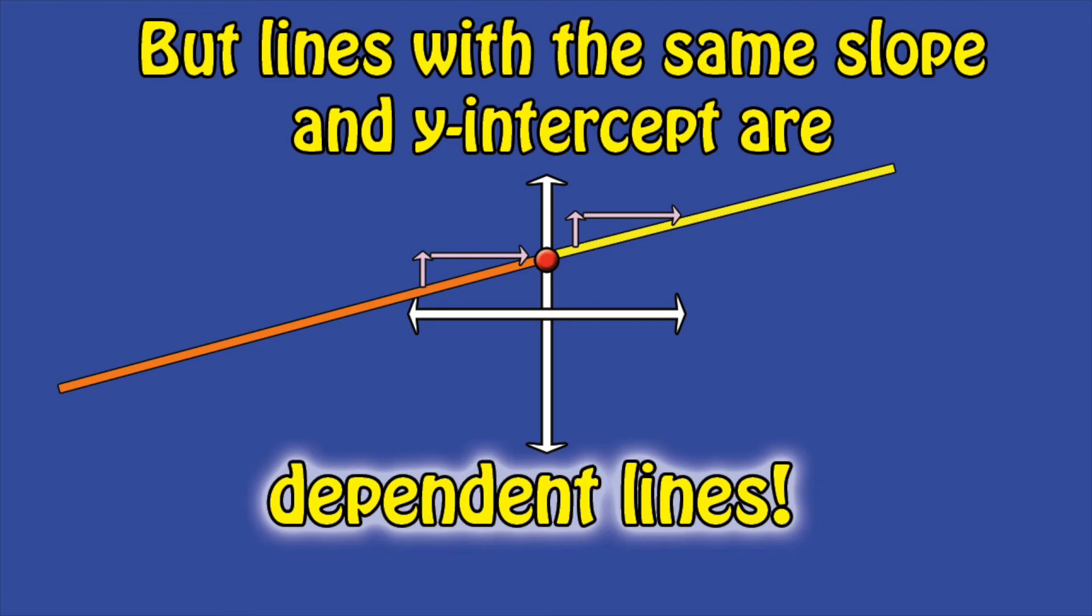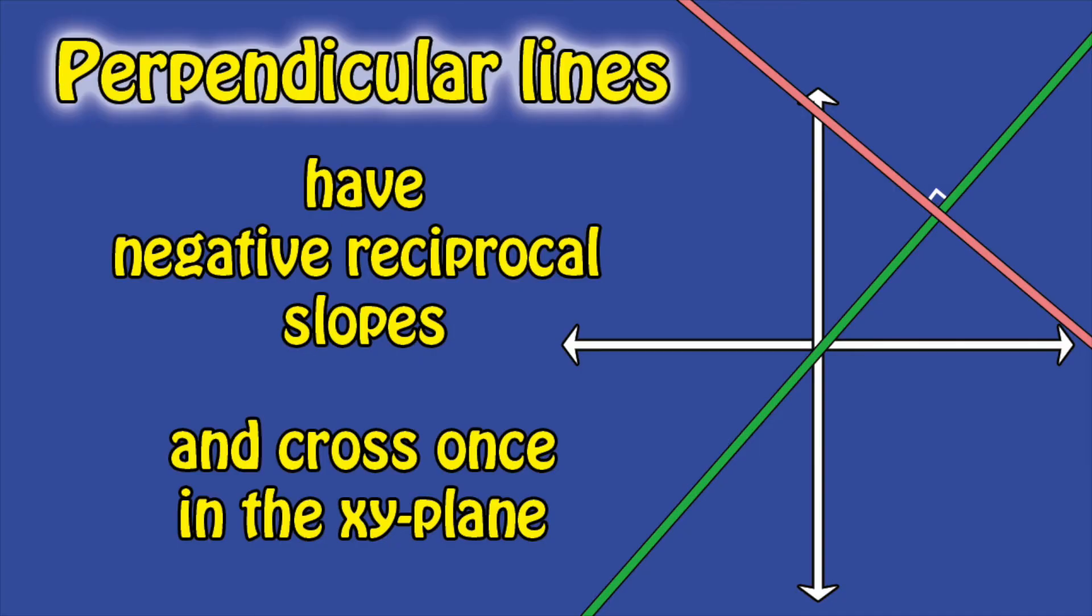But lines with the same slope and y-intercept are dependent lines, they coincide. And perpendicular lines have negative reciprocal slopes and cross once in the x-y plane.